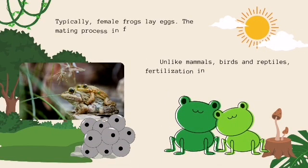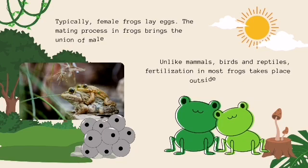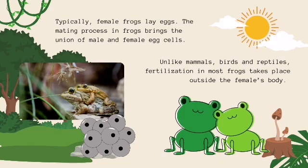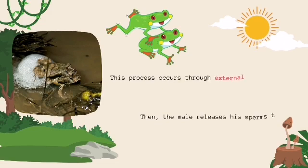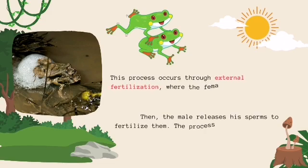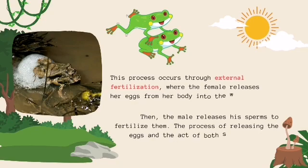The mating process in frogs brings the union of male and female egg cells. Unlike mammals, birds, and reptiles, fertilization in most frogs takes place outside the female's body. This process occurs through external fertilization, where the female releases her eggs from her body into the water. Then, the male releases his sperm to fertilize them. The process of releasing the eggs by both sexes is called spawning.